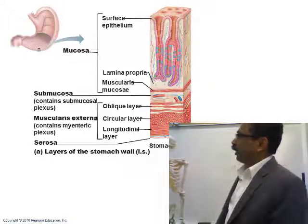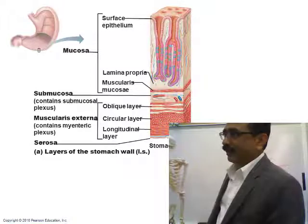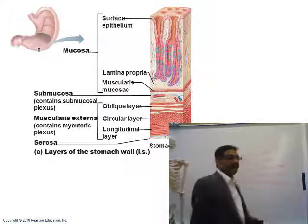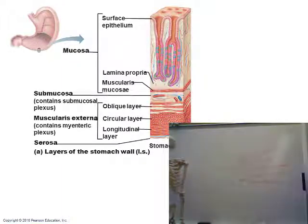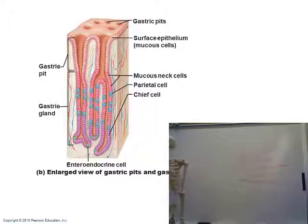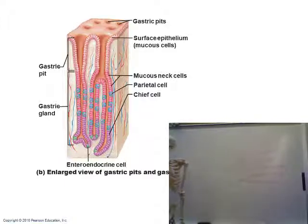The top part of the gastric gland is called the gastric pit, which contains mostly simple columnar cells. The gastric gland cells secrete chemicals, which pass out through the gastric pit openings into the stomach lumen where the food is.